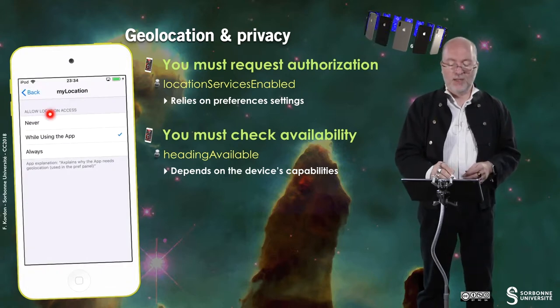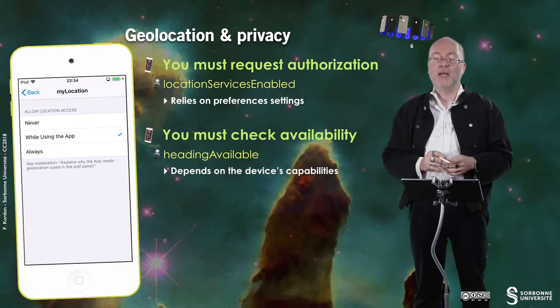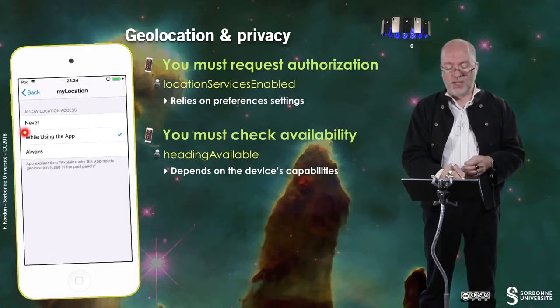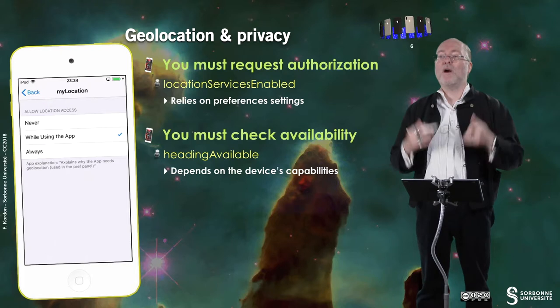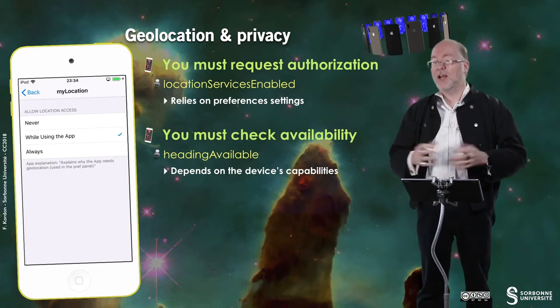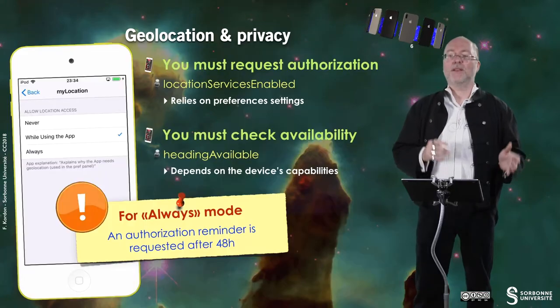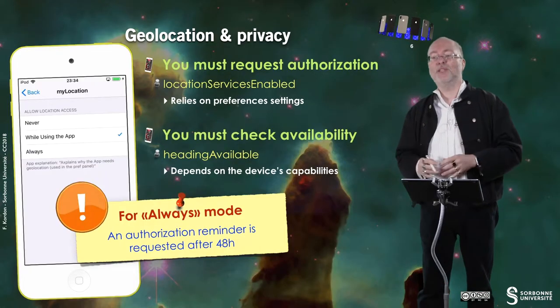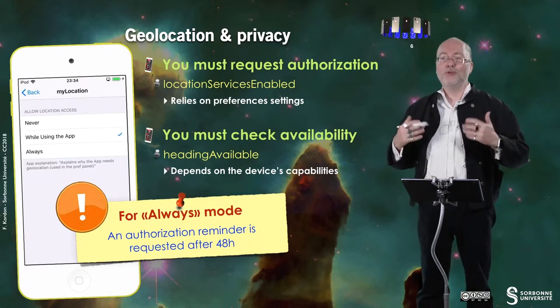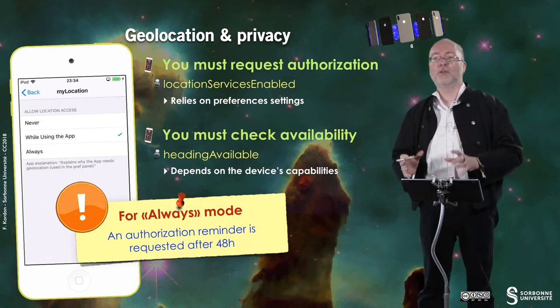You must also check availability of headings using the method headingAvailable, because on some devices such as iPods, headings are not available. In the privacy location services preference panel, you can activate or deactivate global privacy, and each application will also be listed so you can change the conditions of use per application. If the user enables 'always' mode for your application, there will be an authorization reminder within the next 48 hours — this is totally handled by iOS.